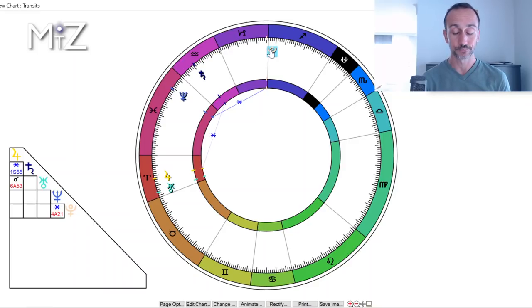So Pluto, planet of transformation and change, going into systems and structures of Capricorn. Now let's take a look at when was the last time this happened. Now Pluto is a very slow-moving planet. And so the last time this happened was back in February of 1776. And so that date should be ringing a lot of bells for a lot of you, especially those in the U.S. That was, of course, the birth of the United States.